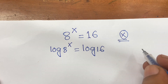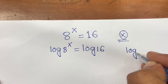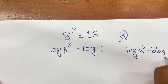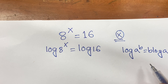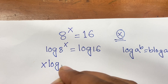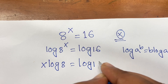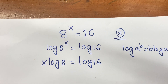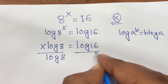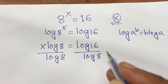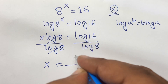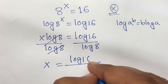Now, according to logarithm rules we know that log a to the power b equal to b log a. If I follow this rule, I can say here is x log 8 equal to log 16. Now I divide both sides by log 8, and log 8 cancels, so here is x equal to log 16 over log 8.